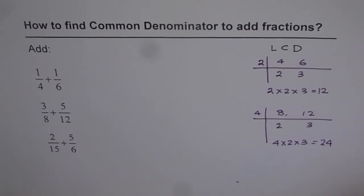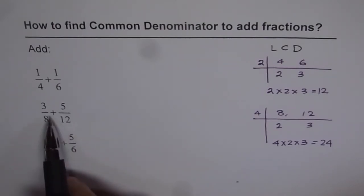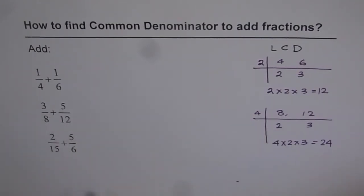Do you get it? Not 8 times 12. 8 times 12 will also be a common denominator but will not be least. But 8 times 12 is 96. That will give us very big numbers. Similarly we can adopt this method to find least common denominator for 15 and 6. I will leave that for you to do.